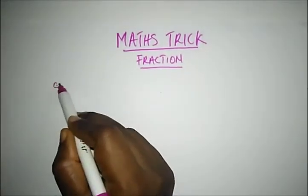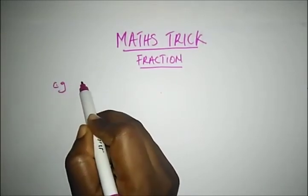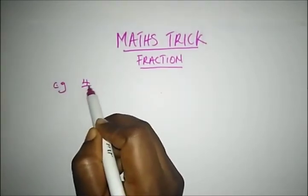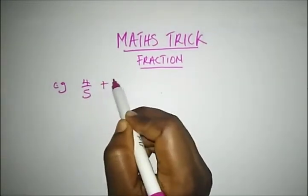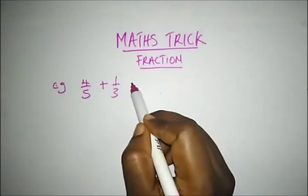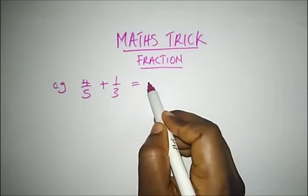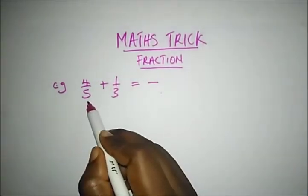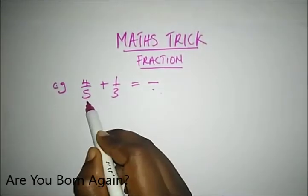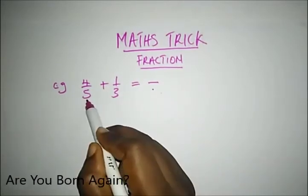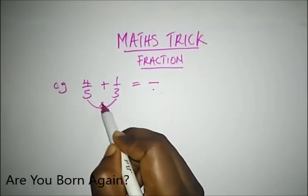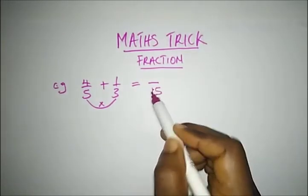For example, if we have these fractions, let's say 4 over 5 plus 1 over 3. What's the first thing we do? We just draw a line immediately to get our numerator, that's our denominator. We multiply 5 and 3. So what's 5 times 3? That will give us 15.